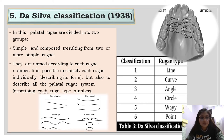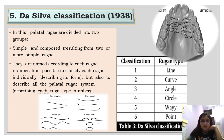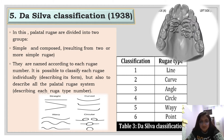The fifth classification was given by De Silva in 1938. Rugae are divided into two groups: simple and composed. Composed rugae result from two or more simple rugae. Each rugae is named according to its number, making it possible to classify each rugae individually by describing its form. In this classification table, rugae are categorized from type 1 to 6: line, curve, angle, circle, wavy, and point. Side A denotes the right side and side B the left side.